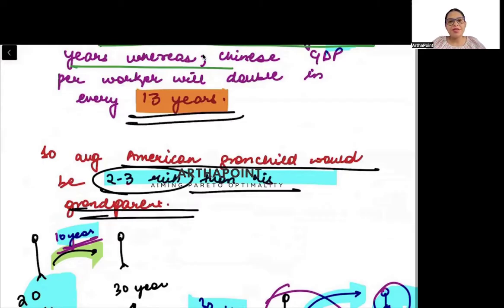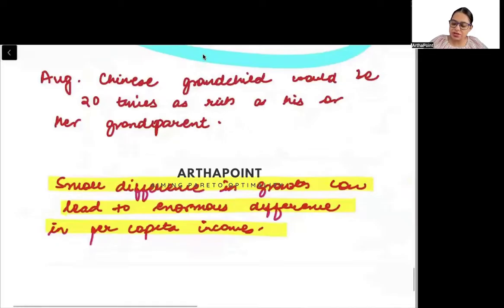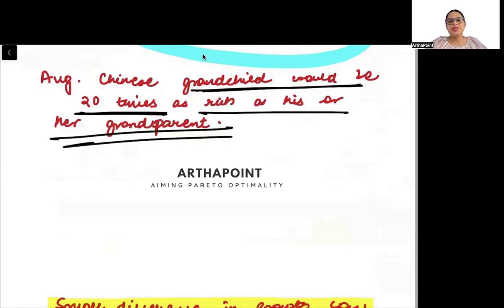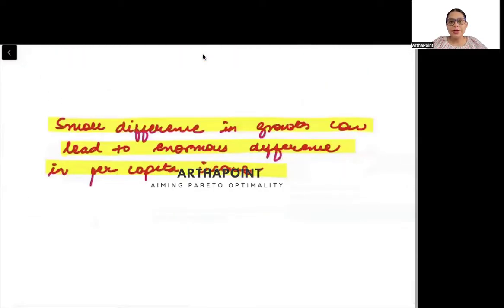But in China, the income is doubling in every 13 years. According to data, it doubled in every 13 years. That means by the time we reach the grandchild, he will be approximately 20 times as rich as his grandparent. This is how we are able to compare the income within the same country, that the coming future generations, how rich they will be as compared to the old generation.